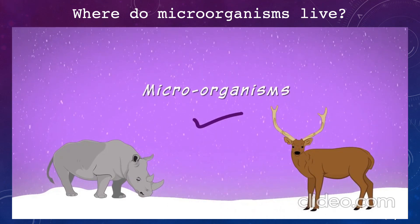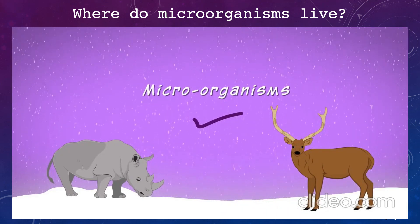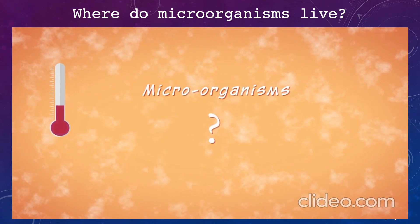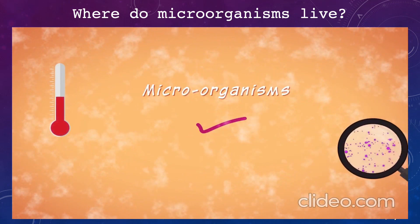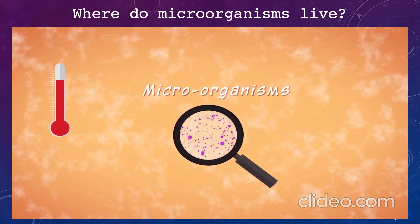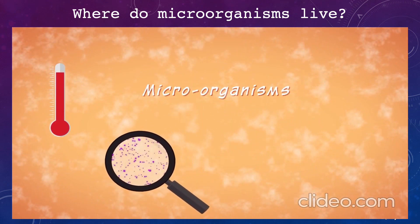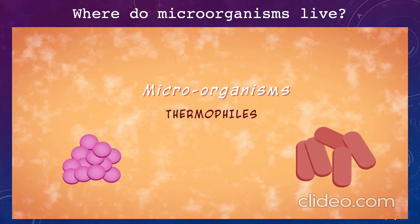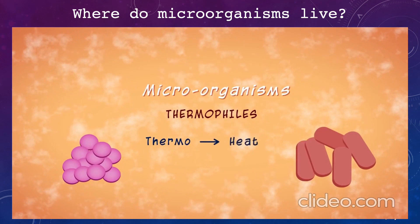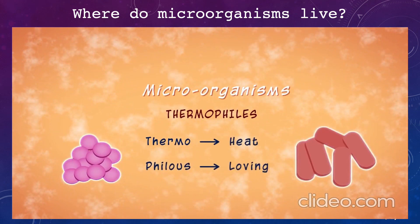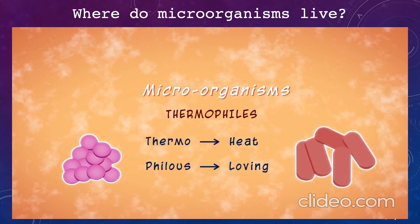Let's switch to the opposite extreme. Let's go to an area where there is extreme heat. Can they survive in extremely hot areas also? Yes — to your surprise, they are able to survive there also. Amongst the many micro-organisms found there, there is one kind of bacteria known as thermophiles. As the name suggests, 'thermo' means heat and 'phile' means loving. These are heat-loving bacteria which can survive only in such hot areas.